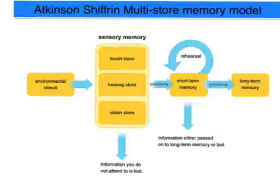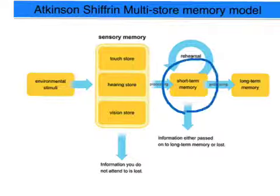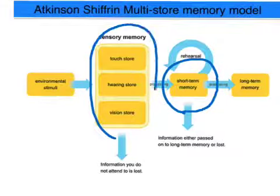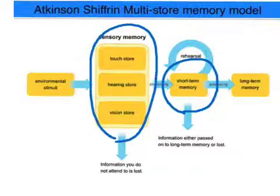So according to Baddeley and Hitch, one of the shortcomings of the Atkinson-Shiffrin multi-store memory model was that based on their model, short-term memory was a unitary storage system — that is, it didn't account for the different types of processing of sensory information.